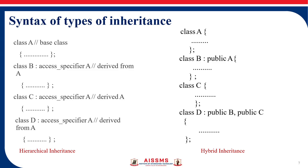We can consider an example: a child and parents. The relation between child and parent follows both multiple and hierarchical inheritance. A combination of these is called hybrid inheritance. The structure has a base class A, a derived class B from A, another class C derived from A, and then a derived class D that uses both B and C as base classes. This is hybrid inheritance.